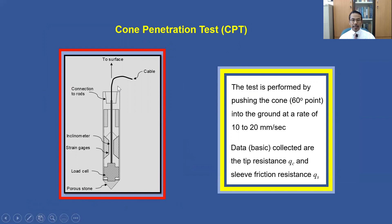There are two types of cone: one is the electric cone, another is the mechanical cone. The electric cone is normally equipped with electronic sensors — a load cell to measure tip resistance when pushed, and another sensor to measure the friction between the shaft of the probe and the surrounding soil. With more sophisticated cones, they may be equipped with an inclinometer device to measure pore pressure and so on.